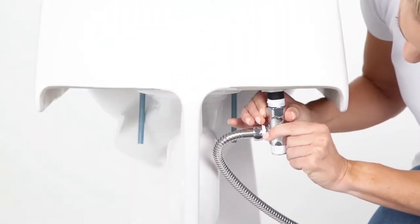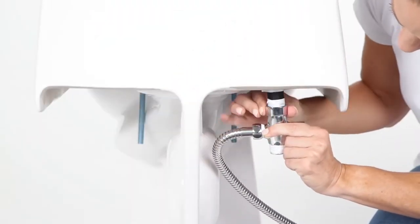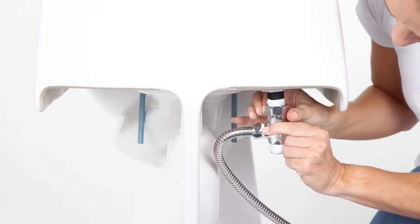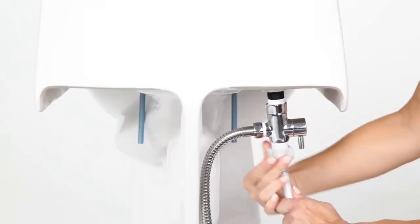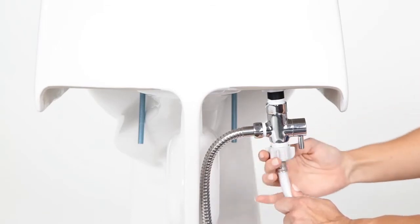Connect the top of the T-valve to the toilet tank. Reconnect the toilet water supply hose to the bottom of the T-valve.